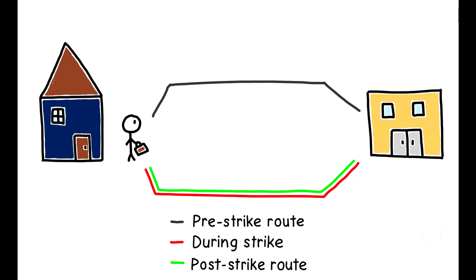Switching would indicate that these commuters preferred the new route over the old one, and had failed to find their best alternative prior to the strike.